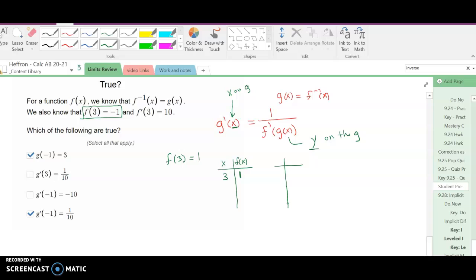Well, since these are inverses, that also means that on the g function, the x is one and the g of x is three.